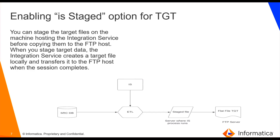Similarly, enabling the staged option for the target means the integration service creates a target stage file locally on the server where it runs, and transfers this stage file after the session and ETL process are completed. As shown in the diagram, it takes data from the source database, applies transformation logic from the mapping, writes everything into a stage file on the local server, and then transfers that stage file to the FTP server.